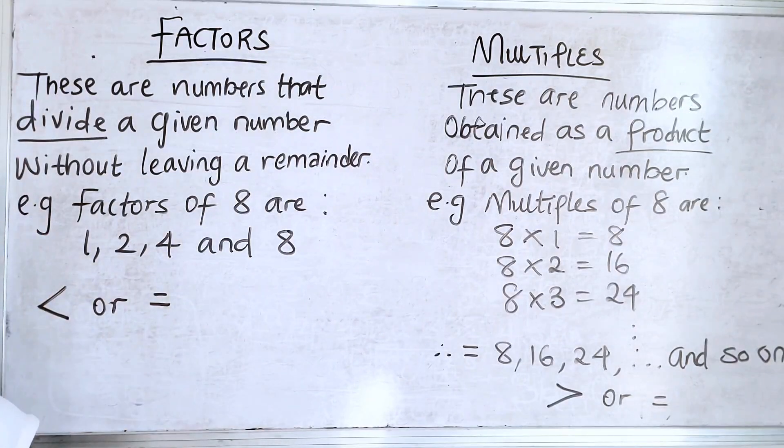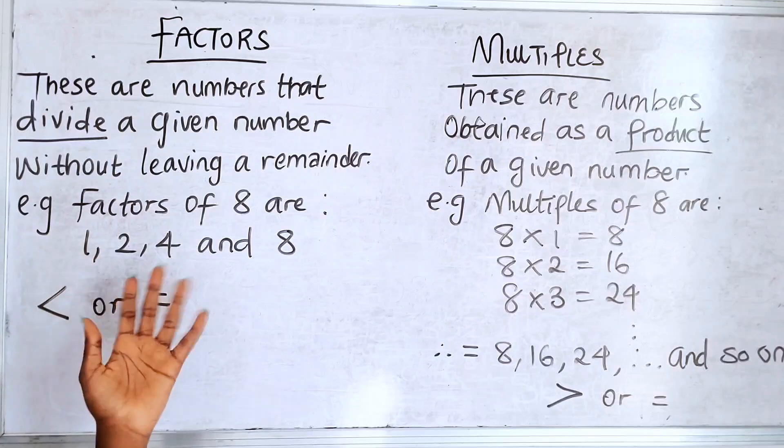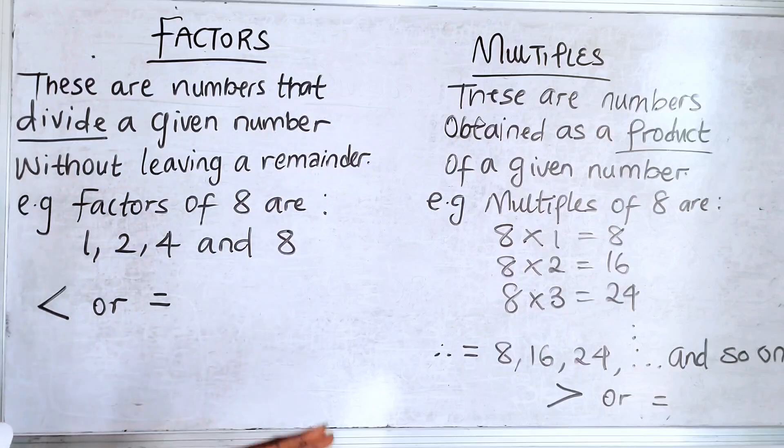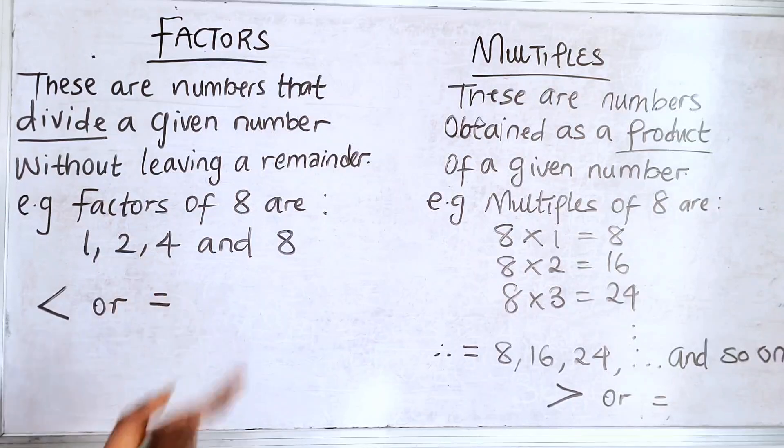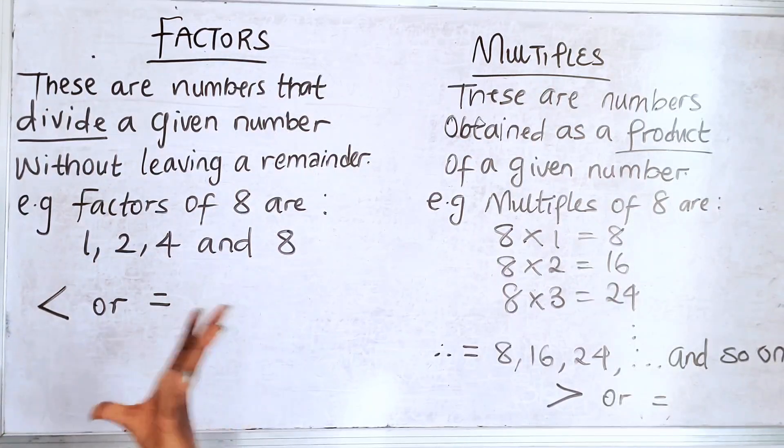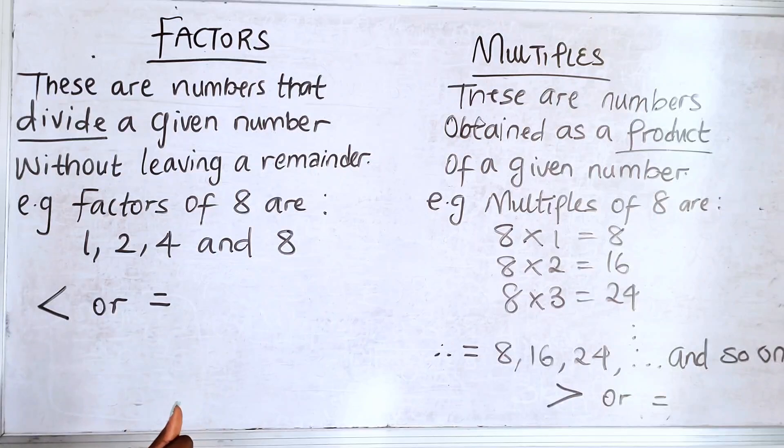So let's say you are giving an example. You're asked to find the factors of 8. We want you to find those numbers that can go in 8 without any remainder. So of course 1 can go in 8 without any remainder. 2 can go in 8 without any remainder. 4 can go in 8 without any remainder. And 8 itself can go in 8 without any remainder.